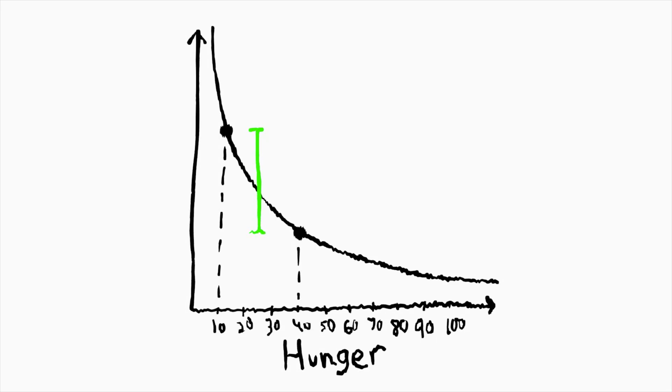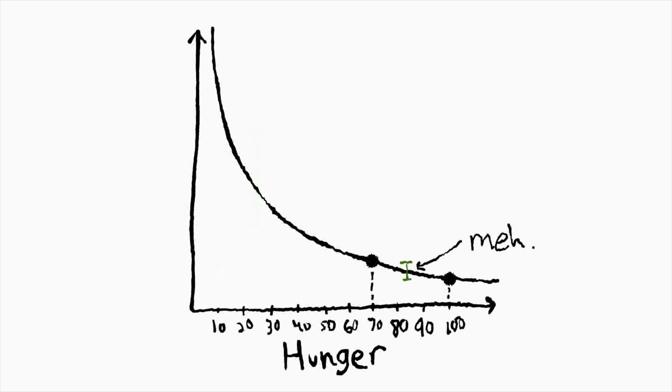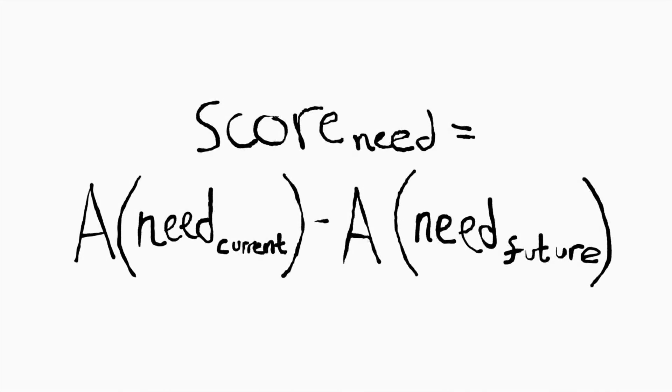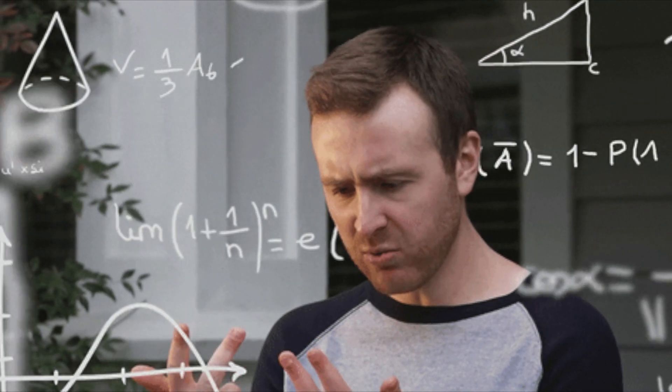How is this helpful with action selection? Let's take hunger for example, where a hunger value of 100 means the NPC is completely full. A 30-point boost to hunger when the NPC's hunger value is at 10 means far more than when it's at 70. To properly determine the best reward, we need to account for which needs are more urgent, and attenuation functions help us do that. To score each need, we determine the difference between the attenuation value at the current need and the attenuation value at the future need. To get the score for a reward, we just add up the scores of each need.